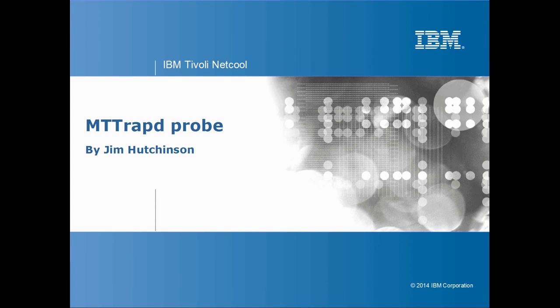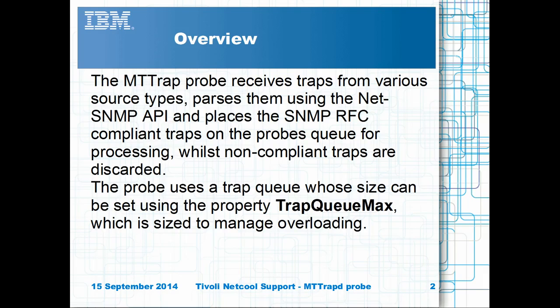This is a bite-sized presentation on the MT-TRAP-D probe. The MT-TRAP-D probe is capable of handling RFC-compliant traps and informs. It uses the NetSNMP API to process the SNMP data before passing the event data to the probe's internal queue. The TrapQueueMax property is used to set the queue size of the queue that holds the events awaiting to be processed by the probe's rules file.